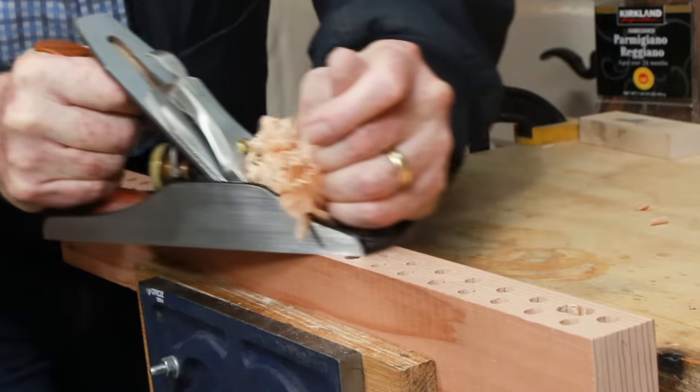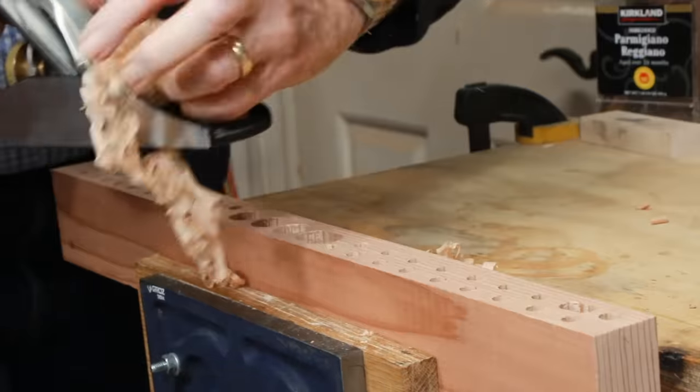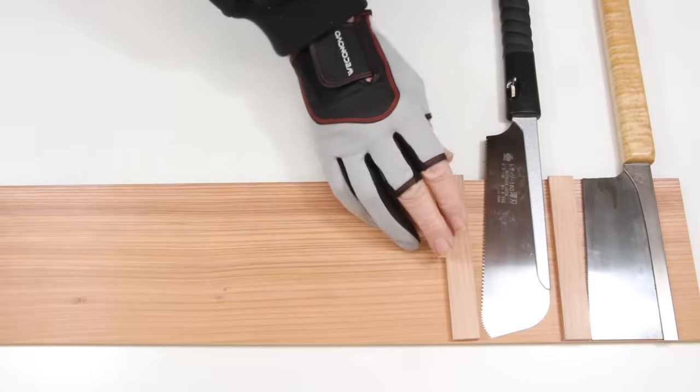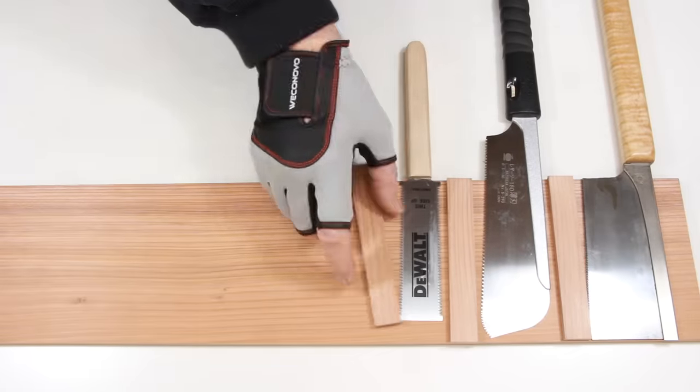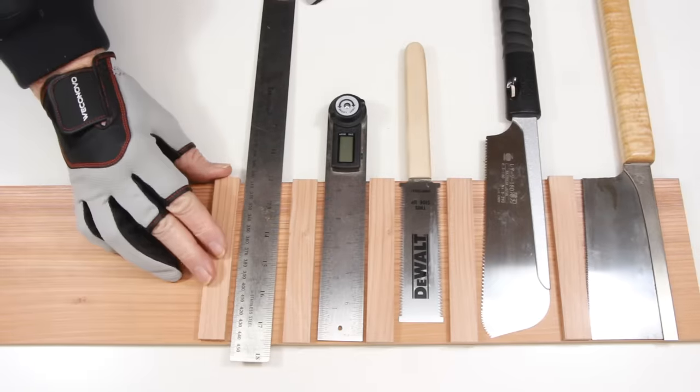Before doing any further assembly, I planed the tops of each component to remove any layout marks and to clean up the edges of the drill holes. Finally, I marked out the locations of the spacer strips that hold the thin back panel, creating slots for my saws and long rulers.